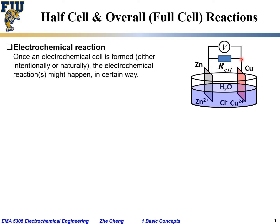Zinc metal and copper metal can be connected through an external circuit with effective resistance R_EXT. Under open circuit voltage conditions, R_EXT goes towards infinity. This is our electrochemical cell, and when we have such a cell, the overall electrochemical reaction might proceed. Any electrochemical reaction actually consists of two so-called half-cell reactions.